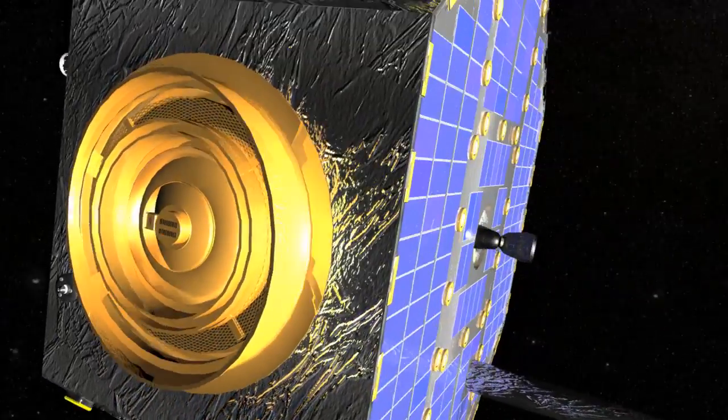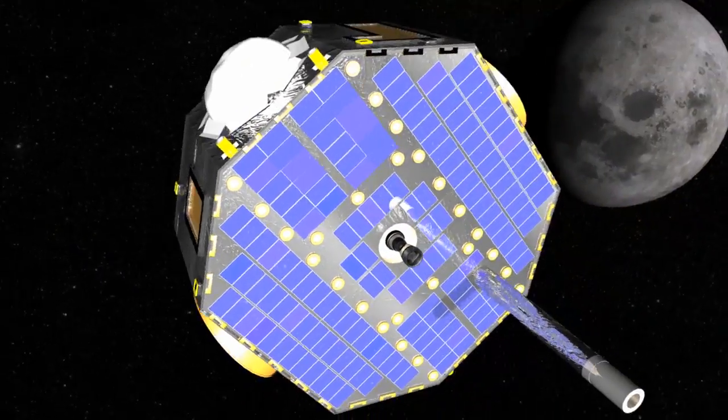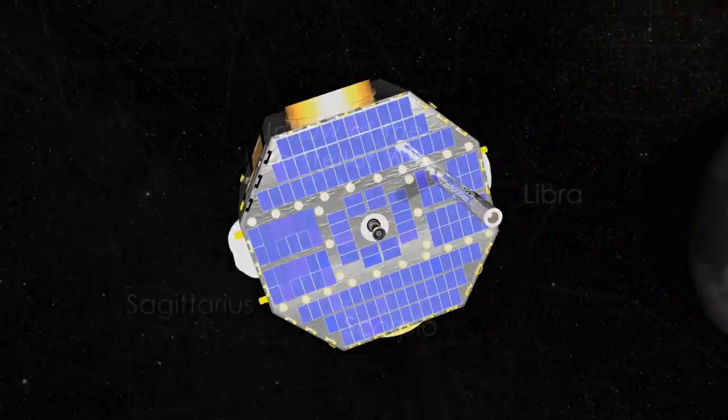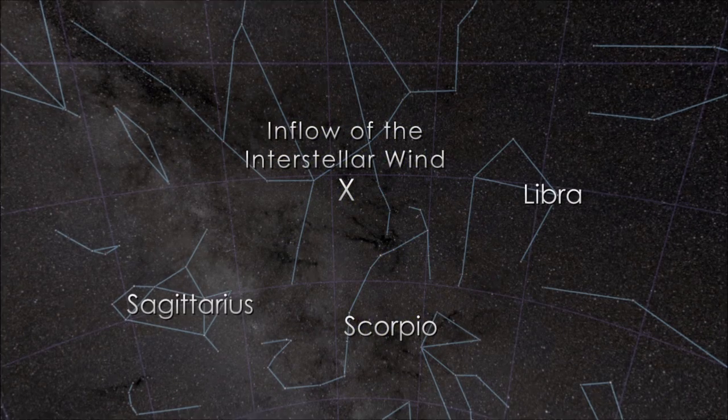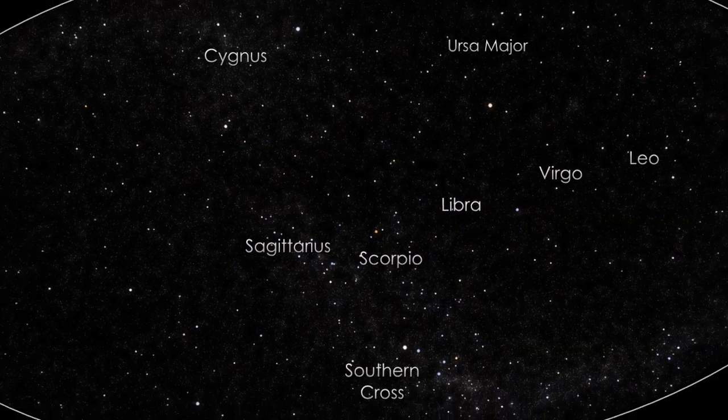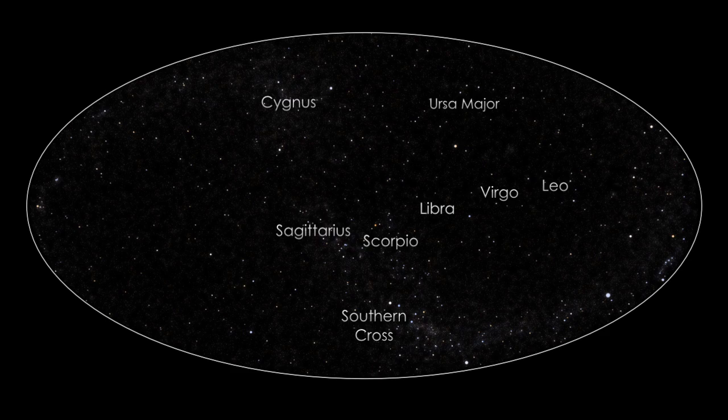IBEX, or the Interstellar Boundary Explorer, is designed to study this region from Earth orbit and has now made the first direct measurements of hydrogen, oxygen, and neon from outside the solar system.